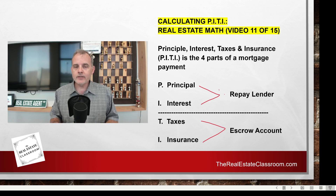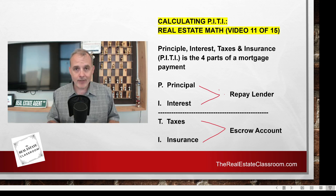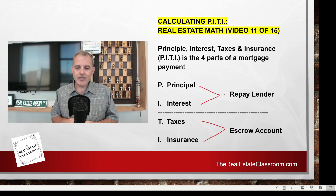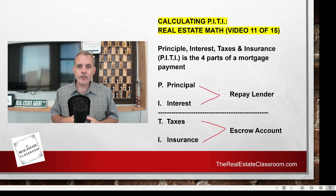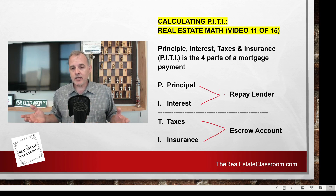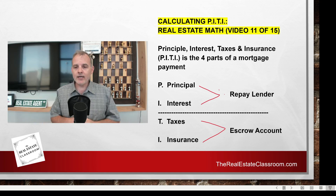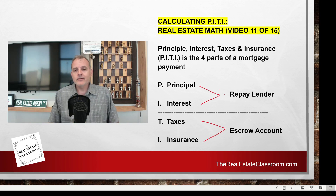What the lender does not want is the homeowner being responsible to pay those things and then not paying them. That creates clouds on the title as far as your taxes go, because if you don't pay property tax, a tax lien certificate is sold off at auction, which places a priority lien — even priority over the mortgage — if those taxes aren't paid. The lender also wants the property protected against loss, such as fire, so they handle those payments on your behalf.